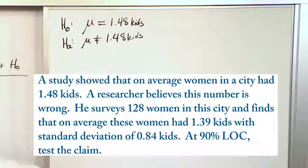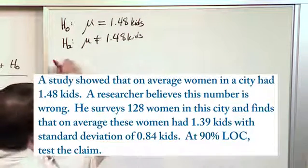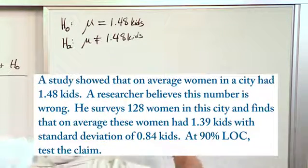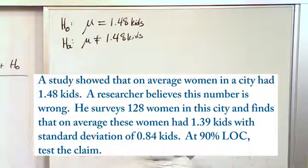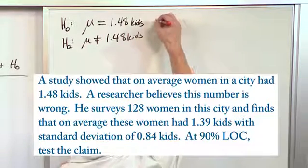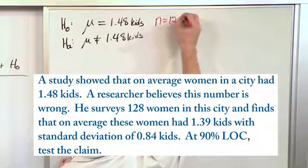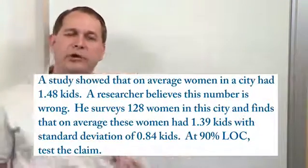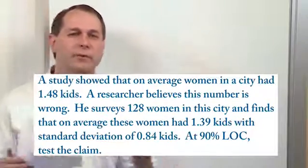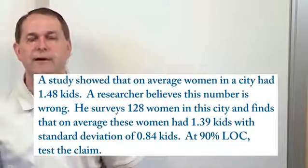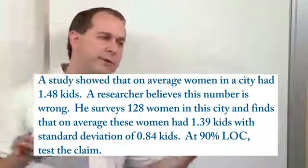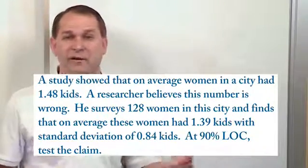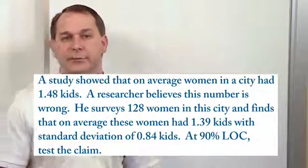We know lots of other stuff. In order to test this, he surveyed people asking how many kids they have, with a total sample size of 128 women. So we know that n is 128. Notice that the number of samples chosen is greater than 30, so that's why we're able to use the normal distribution. If it were smaller than 30, we would have to use the t-distribution because the normal distribution isn't very accurate with a very low number of sample sizes.